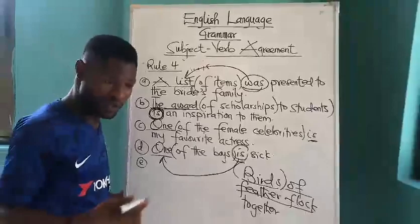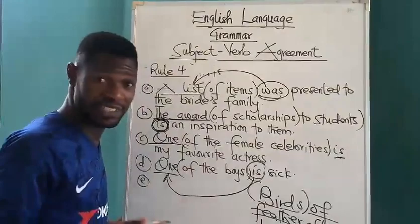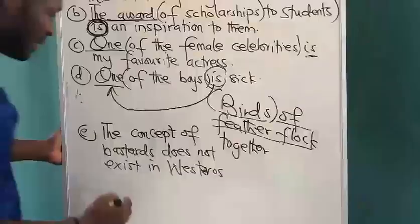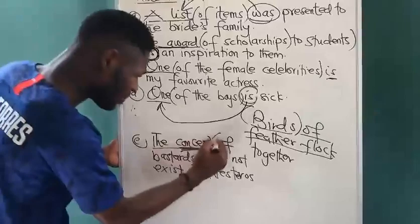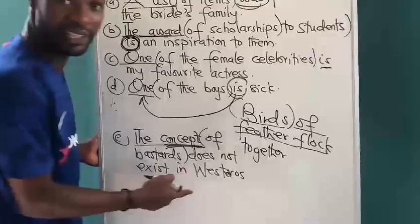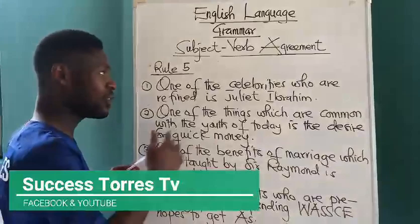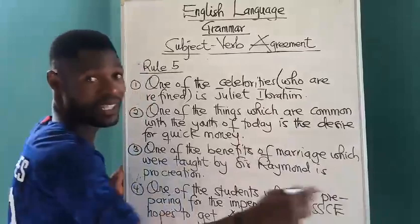Those of you who are fans of Game of Thrones, season seven — there was a conversation between Missandei, who was a servant to Queen Daenerys, and Jon Snow. They were talking about bastards, and the lady said she is surprised about bastards in the north. Missandei said that 'the concept of bastards does not exist in Naath.' So 'the concept' here is a singular subject followed by plural modifier 'of bastards'. Movies like this are so enriching — the language is rich and standard. The next rule is in line with Rule 4 but embeds relative pronouns or relative clauses.